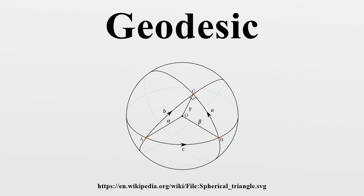In metric geometry, a geodesic is a curve which is everywhere locally a distance minimizer. More precisely, a curve gamma from an interval I of the reals to the metric space M is a geodesic if there is a constant V≥0 such that for any t in I there is a neighborhood J of t in I such that for any t1, t2 in J the distance formula holds. This generalizes the notion of geodesic from Riemannian manifolds. However, in metric geometry the geodesic considered is often equipped with natural parameterization, i.e., V equals 1, and if the last equality is satisfied for all t1, t2 in I, the geodesic is called a minimizing geodesic or shortest path. In general, a metric space may have no geodesics except constant curves. At the other extreme, any two points in a length metric space are joined by a minimizing sequence of rectifiable paths, although this minimizing sequence need not converge to a geodesic.